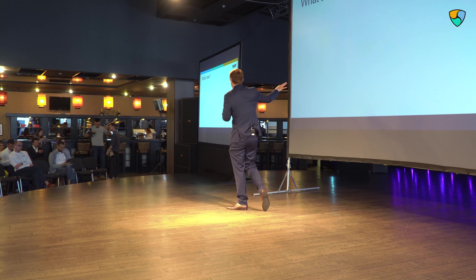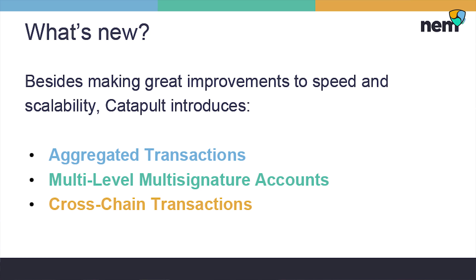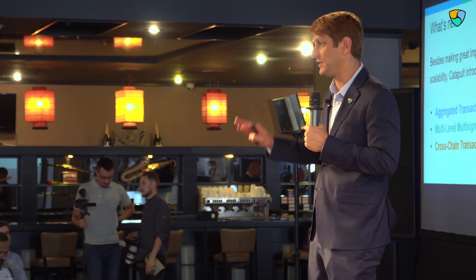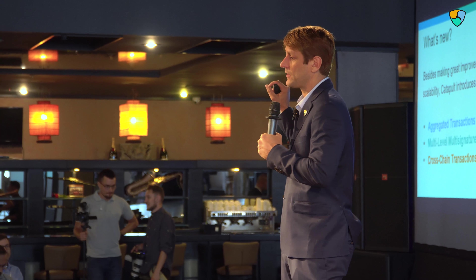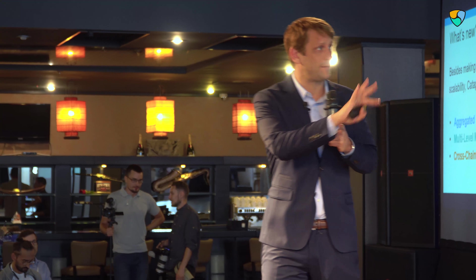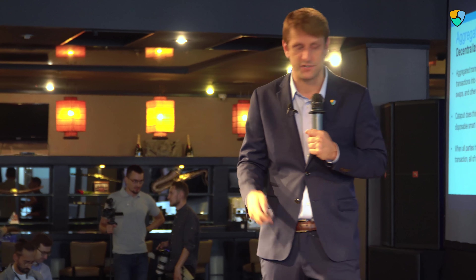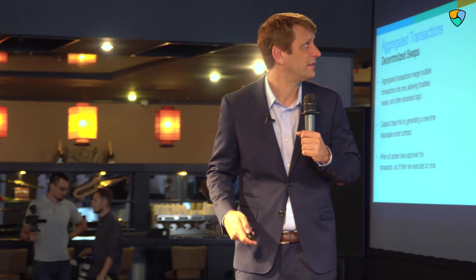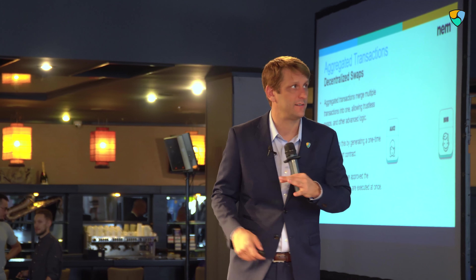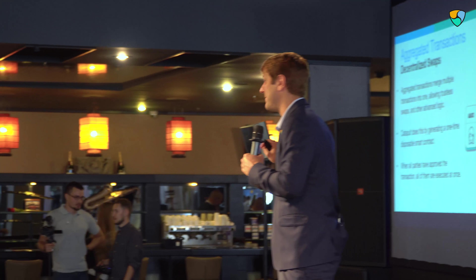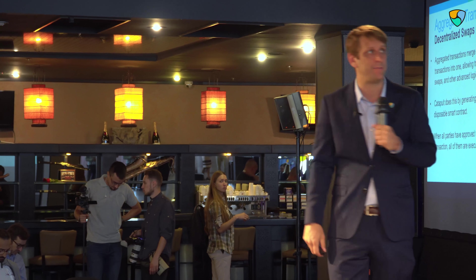NIM has a different architecture. What does NIM do in Catapult that's especially neat? We are doing aggregated transactions, multi-level multi-sig, and cross-chain transactions. Aggregated transactions are one of my favorite things, and again this is something I've not seen any other blockchain be able to do. Imagine something like a house certificate.